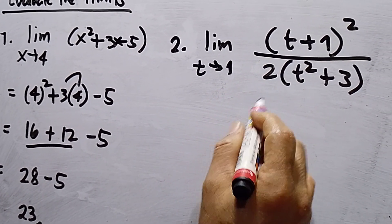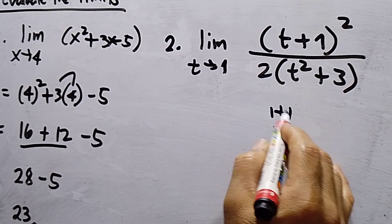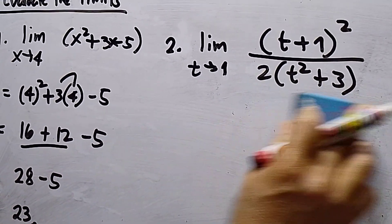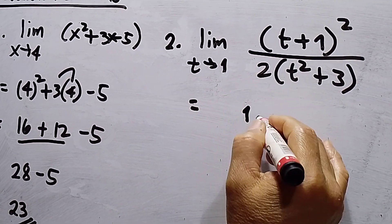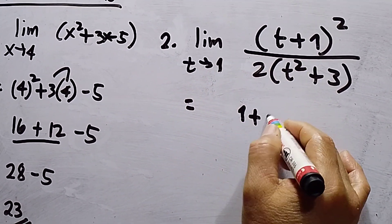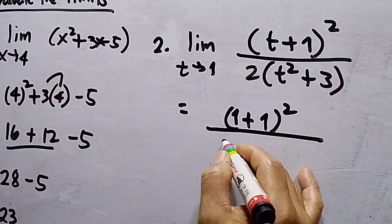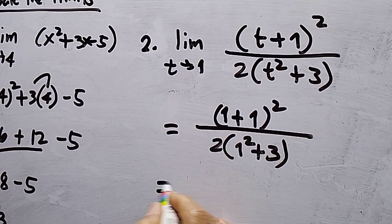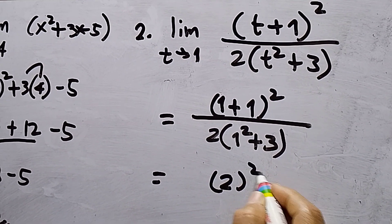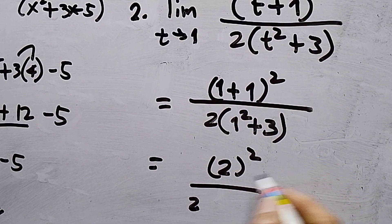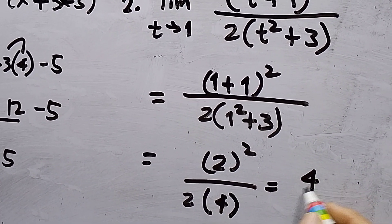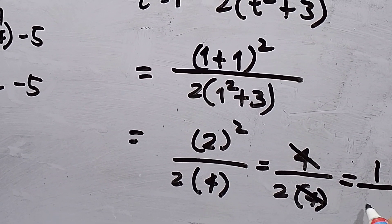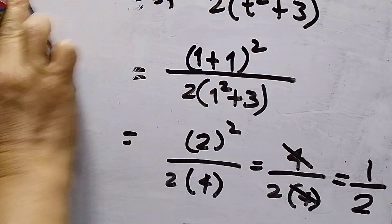For number two, if we substitute t equals 1, this is not undefined so we substitute straight away. This gives 1 plus 1 squared all over 2 times 1 squared plus 3. That is 2 squared over 2, with 1 squared plus 3 equal to 4. So we get 4 over 2 over 2 times 4 — cross out 4 — and the answer for number two is 1 over 2.